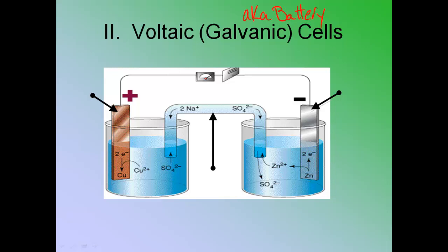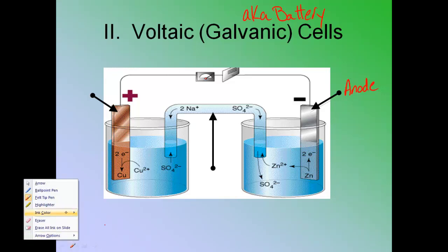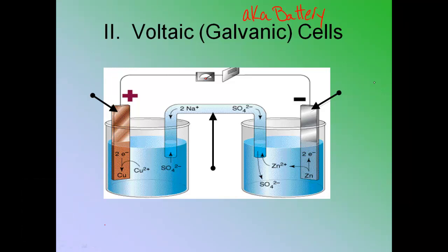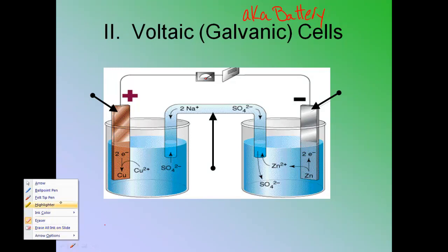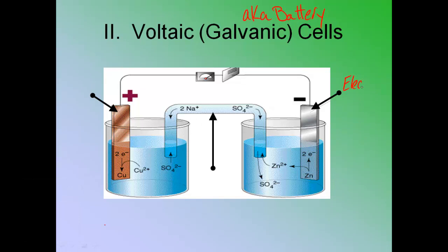So there's a couple things that we need to talk about. These little metal things on the ends are what are called electrodes, these metals.